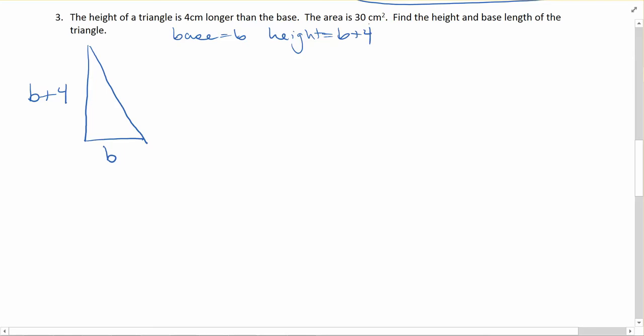The area is equal to 30 centimeters squared. So let's think about what the area of a triangle is. You might have to call on previous knowledge to solve these problems. The area of a triangle is one-half times base times height. Sometimes it's written like this or like this, but either way that's going to be our area formula.